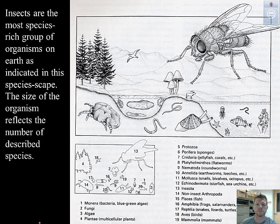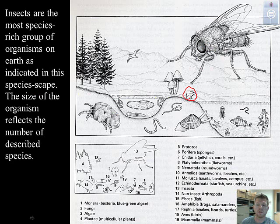Common insect orders. First of all, if we take a look at the speciescape, insects are going to be the largest organism on here — that's representing their diversity. You can see just in comparison, mammals are represented by this elk, very small in comparison to the insects. That's saying there's much less diversity in mammals than there are in insects.